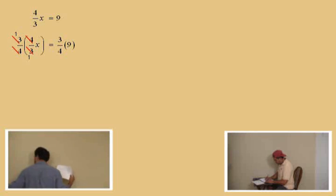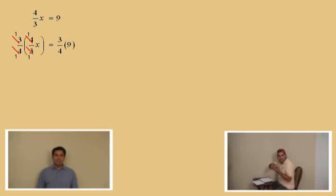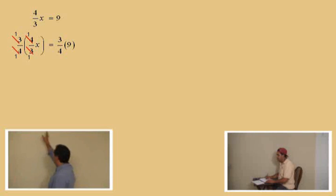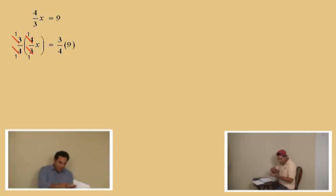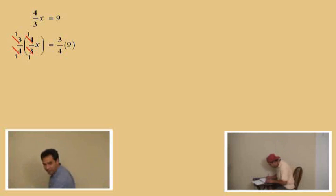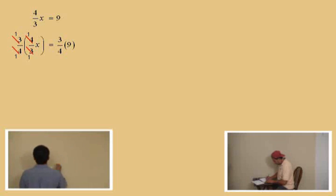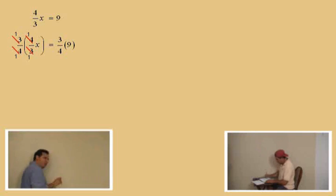The threes cancel out and you get one over one. The fours will also cancel, giving you one over one. One times one is one on top, one times one is one on the bottom, so we end up with one divided by one, which is one. So you have one x on the left hand side.